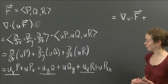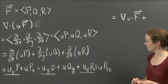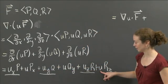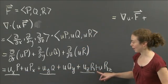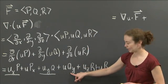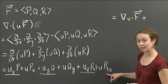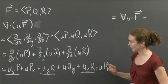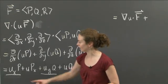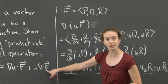And now there are three components remaining. Notice what they all have in common. They all have a u in the first spot. And then it's multiplied by P_x. And then here it's multiplied by Q_y. And here it's multiplied by R_z. But that is exactly, P_x plus Q_y plus R_z is exactly the del operator acting on this vector field F.